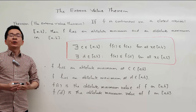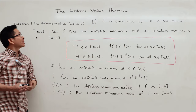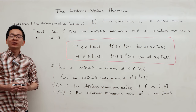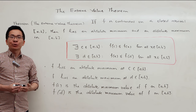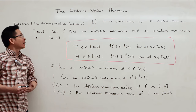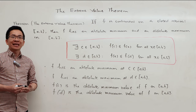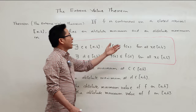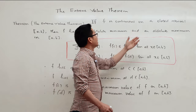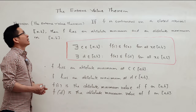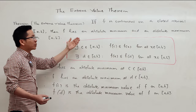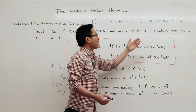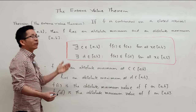In this lecture, I'm going to talk about the extreme value theorem. This is one of the most important theorems of calculus. The extreme value theorem says that if f is continuous on a closed interval ab, then f has an absolute minimum and an absolute maximum in the interval ab.